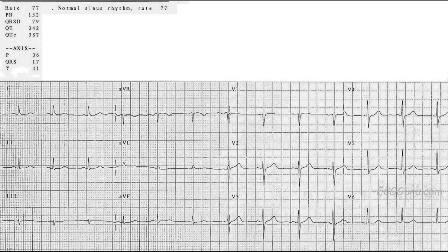Speaking of P waves, there should be a P in front of every QRS, even if they're a little hard to see, like in lead three. We know lead three has a P wave because lead two and lead one do. There should be a P wave in front of every QRS, and there is in this case.